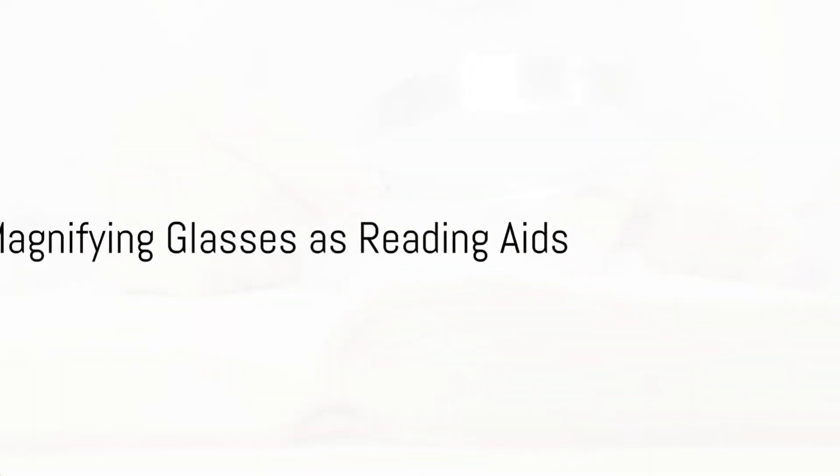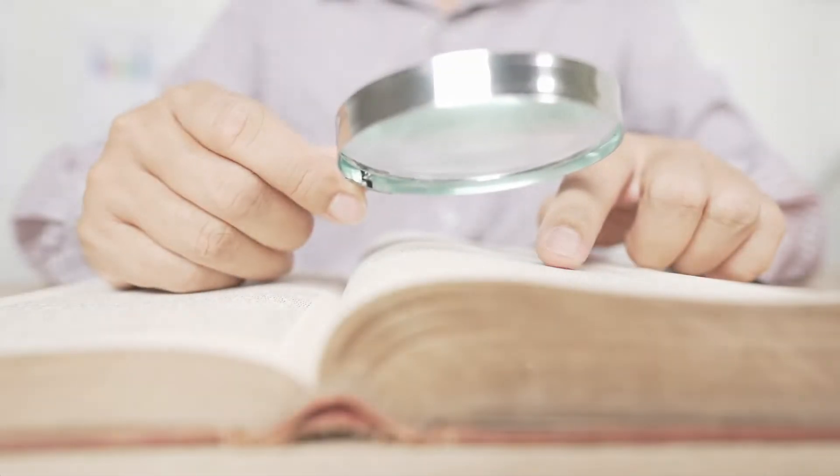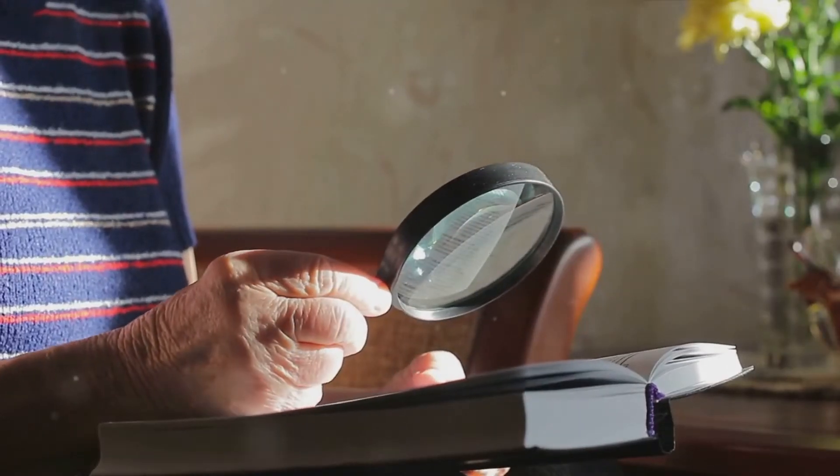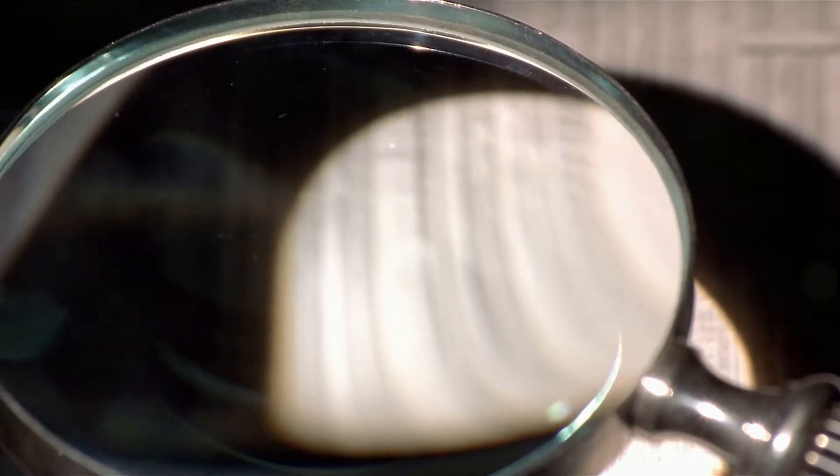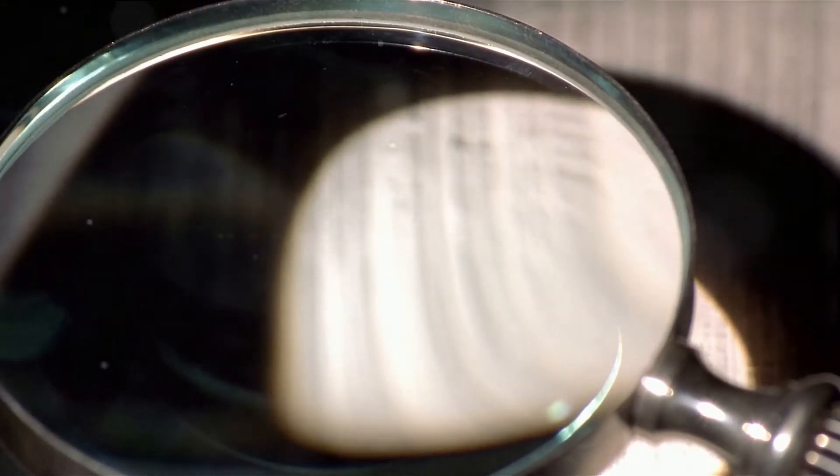Struggling to read small print? A magnifying glass might be your best friend. They're invaluable aids for those with visual impairments, and even for reading the tiny text in maps, newspapers, or books.